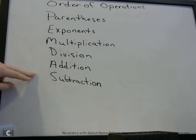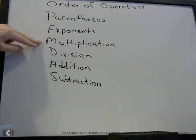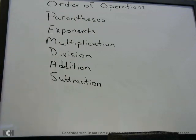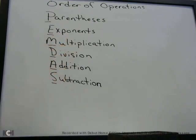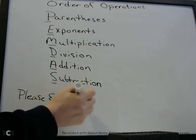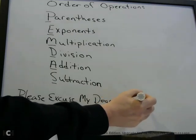So I want you to copy this down, what I have written on the board here. Parentheses, exponents, multiplication, division, addition, subtraction. This is the order that you're going to do the operations in, so you need to have this memorized. One way that a lot of people memorize it is through a mnemonic device in which you just take the first letter of each of these and make a phrase called: Please Excuse My Dear Aunt Sally.